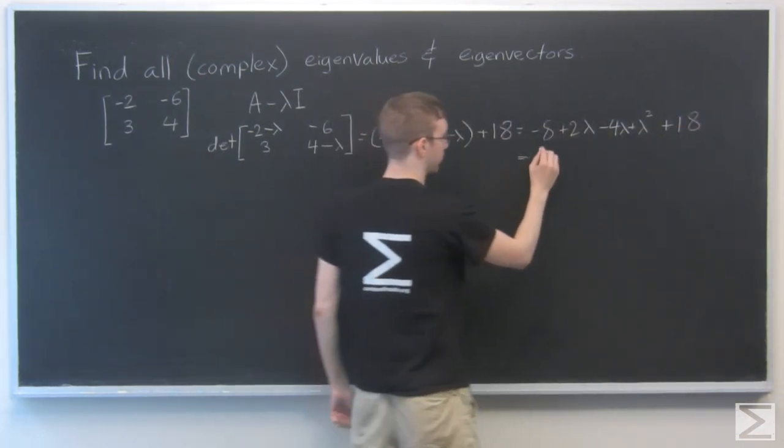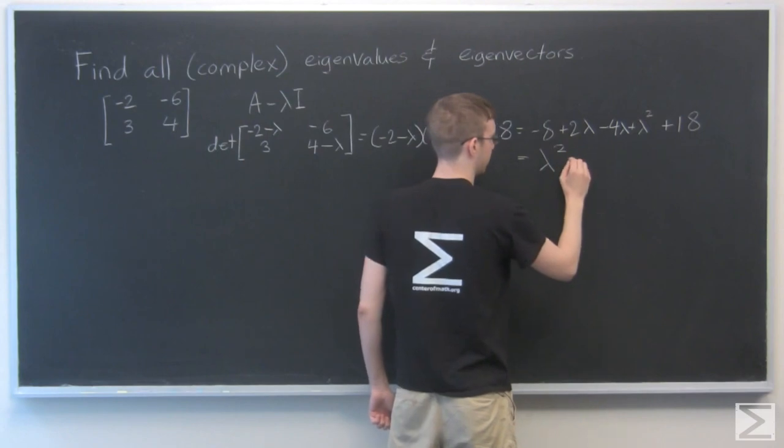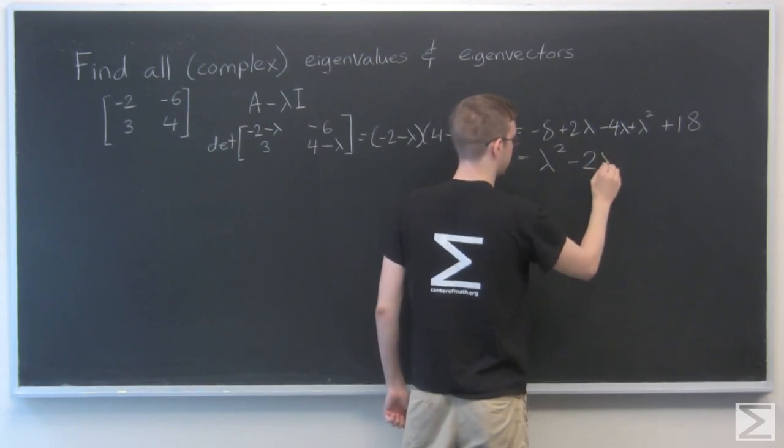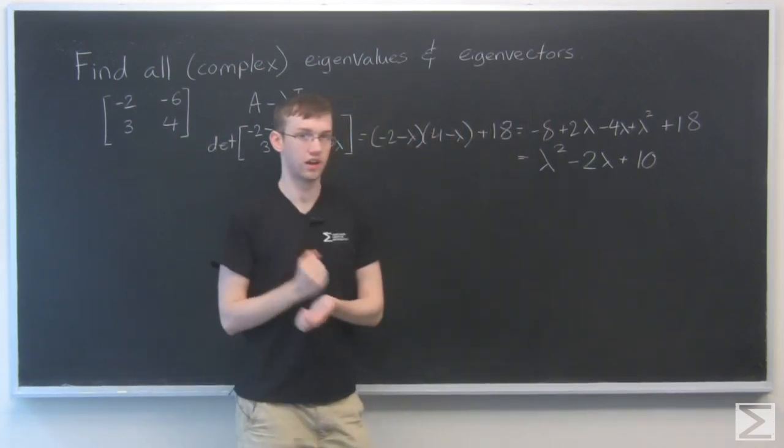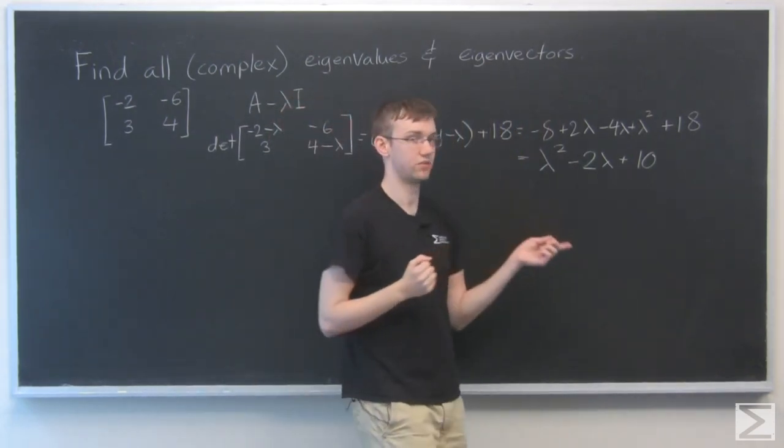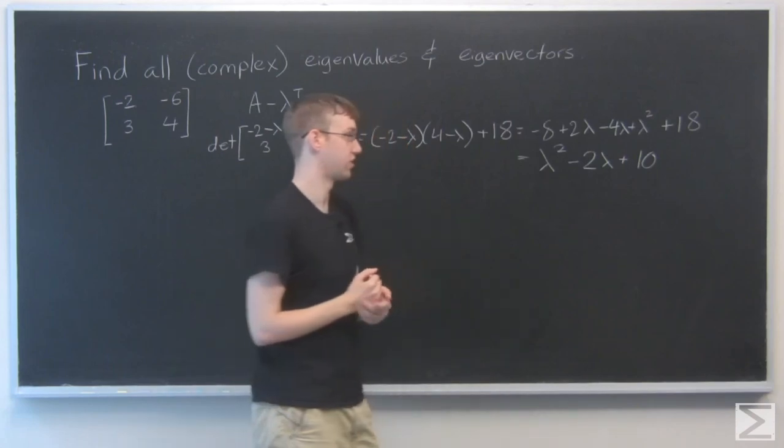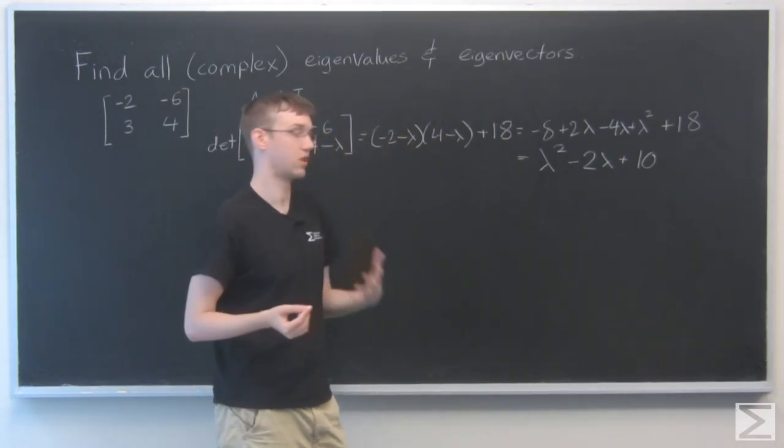And to simplify that down, we're going to get lambda squared minus 2 lambda plus 10. OK, we need to find the roots of this equation. It's a quadratic equation, so we can use the quadratic formula.